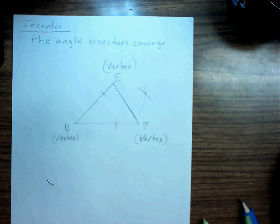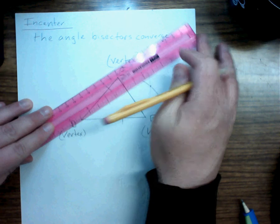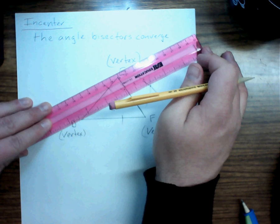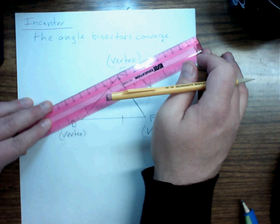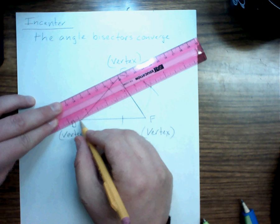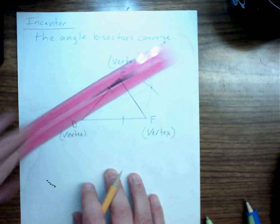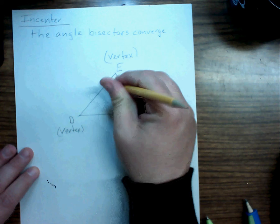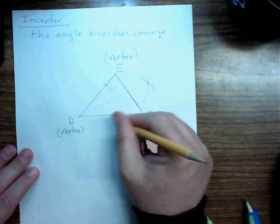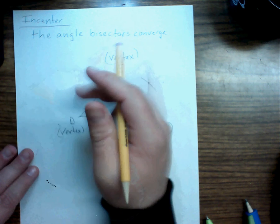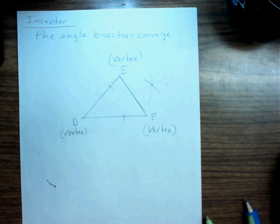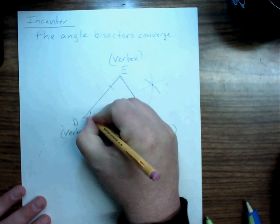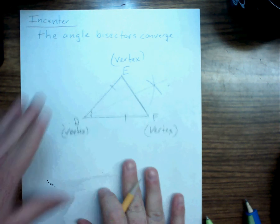If I draw a line from angle D out to this intersection point — and I'm going to draw my line very light, from here out to here — that is an angle bisector. I'm going to erase these because my lines got a little dark. Now I've bisected angle D into two equal congruent parts. In other words, this angle and this angle are congruent, and they're exactly one-half of the total angle D.